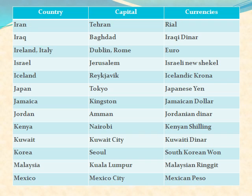Iraq: capital is Baghdad and currency is Iraqi Dinar. Ireland: its capital is Dublin and currency is Euro. Italy: its capital is Rome and currency is Euro. Israel: its capital is Jerusalem and currency is Israeli Shekel. Iceland: its capital is Reykjavik and currency is Icelandic Krona. Japan: its capital is Tokyo and currency is Japanese Yen. Jamaica: its capital is Kingston and currency is Jamaican dollar.